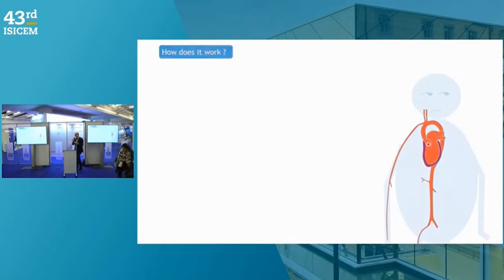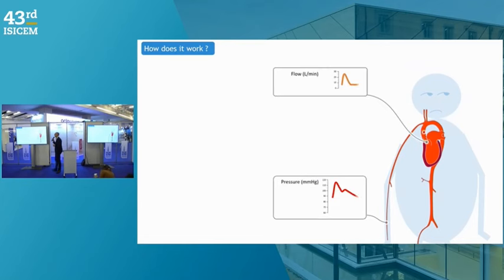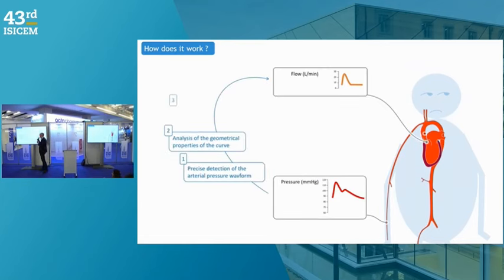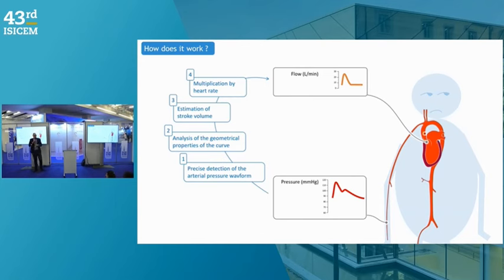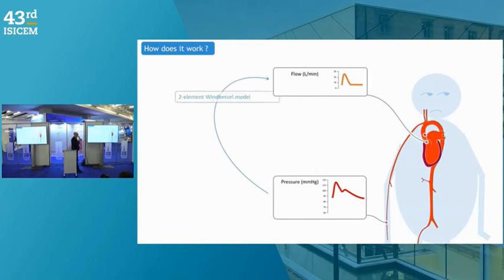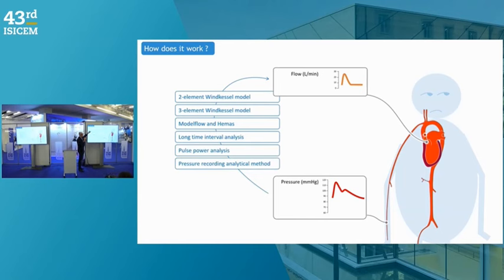How do such devices estimate stroke volume? Basically, they measure the peripheral arterial waveform, analyze the geometrical properties of the curve with specific software — critically detecting the dicrotic notch — then estimate stroke volume, multiply by heart rate, and display cardiac output. There are various algorithms that can be used, and the way they function is kept proprietary by the manufacturers.